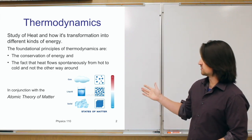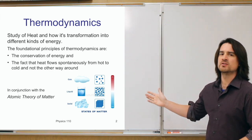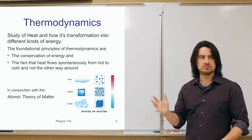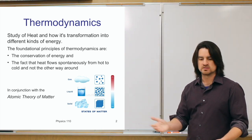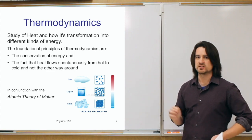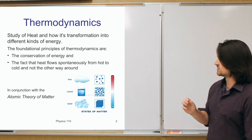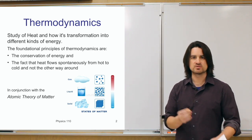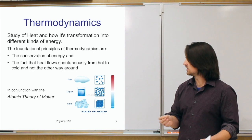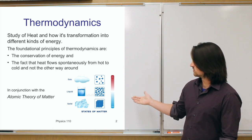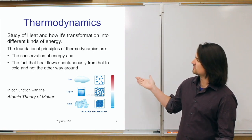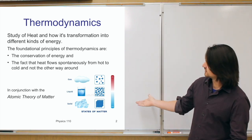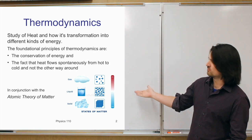The atomic theory of matter is essentially that matter — me, you, the camera, tables, chairs, all that kind of stuff — is made up of atoms. Beyond that, those atoms are always in motion. In general, there are three main states of matter: solids, liquids, and gases. For the most part, going from solid to liquid to gas is just more and more motion.